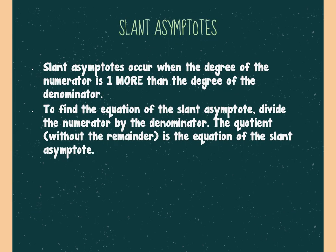Now the slant asymptote — this is the third kind of asymptote. We did horizontal, we did vertical, and now slant. A slant asymptote occurs if the degree of the numerator is exactly one more than the degree of the denominator. No more, no less — it has to be exactly one more. If it's more than that, there's neither a horizontal nor a slant asymptote.